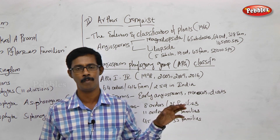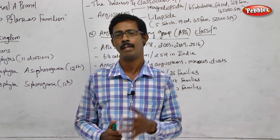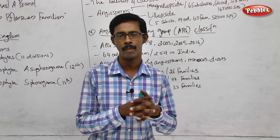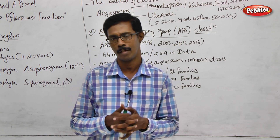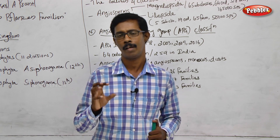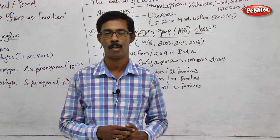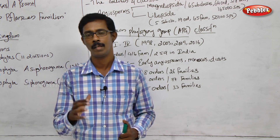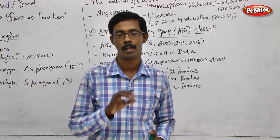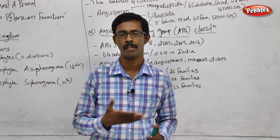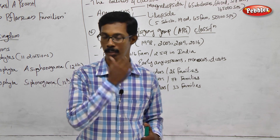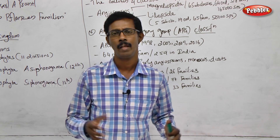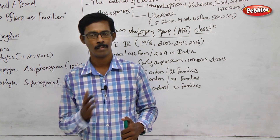Topics covered include: what is taxonomy, what is systematics, what is the taxonomic hierarchy, the ICN principles and rules, nomenclature and binomial nomenclature, species, type concepts, herbarium, and botanical gardens. The types of classification are: artificial type, natural type, phylogenetic system of classification, and APG system of classification. We have looked at the outline of these details.